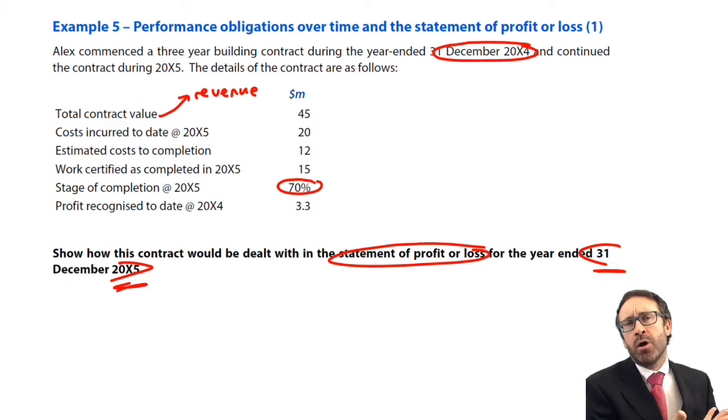So effectively to you and I, that is the total revenue that we're going to get from this contract over the three years. It says the costs incurred to date at X5. So that says to date to X5. So that is effectively what you have incurred for X4 and X5. Because this contract is progressing over three years. We're effectively into the second year of the three. So what will have been incurred in the first year, X4? What will have been incurred in the second year, X5? Well, it tells us in total that there is $20 million. We're also told the estimated costs to complete are there at 12.